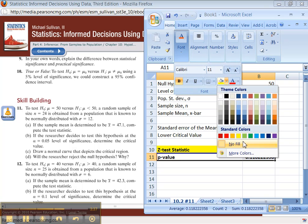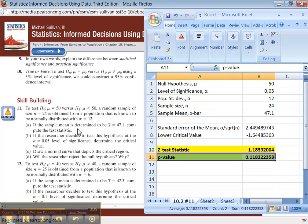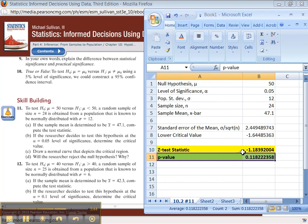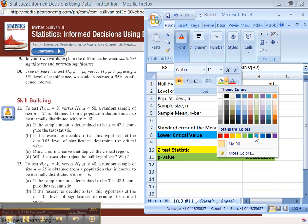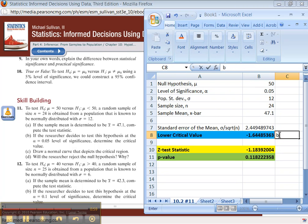So let's see if we've answered all the questions they had. If the sample mean is determined to be 47.1, compute the test statistic. There it is. So that's the answer for A. If the researcher decides to test this at the 0.05 level of significance, determine the critical value. There's B right there. This is the answer to B. This is the answer to A. Draw a normal curve. Well, we can't really do that with Excel, so don't worry about that.